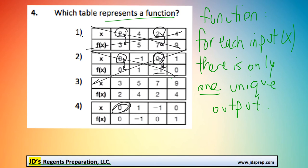Similarly in number 4, table number 4 here, we have the exact same situation. Input of 0 gives us an output of 0 or 1, so that's not a function. So number 3 is the correct one.